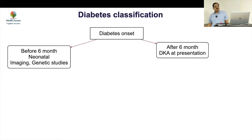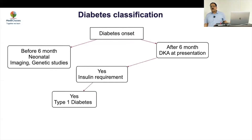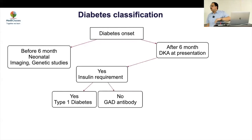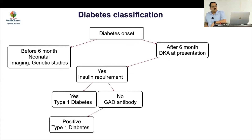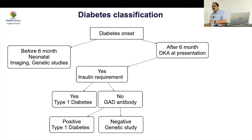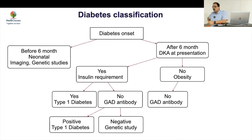If onset is after six months of age and there is DKA presentation with insulin requirement, this is Type 1 — don't do any further workup. If insulin is not needed — there may be a honeymoon phase — but if after one or two years insulin is still not required, do a GAD antibody. If positive, this is Type 1; if negative, go for MODY.